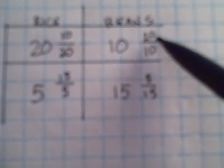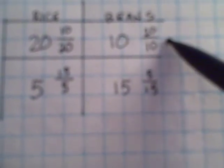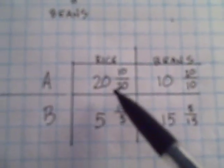And then the same thing goes over here. 20 over 10 is 2, and 5 over 15 is 1 third. Country B then should make the beans.